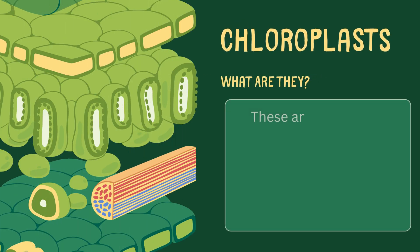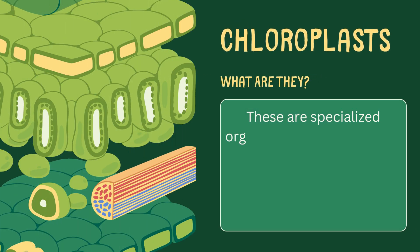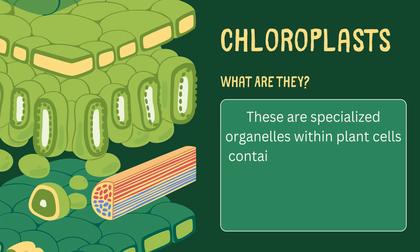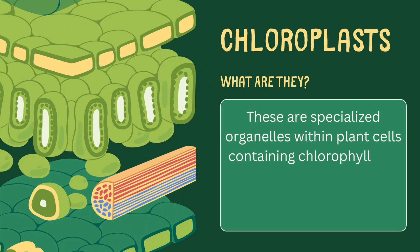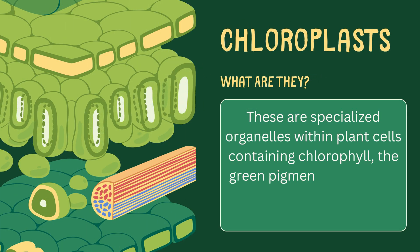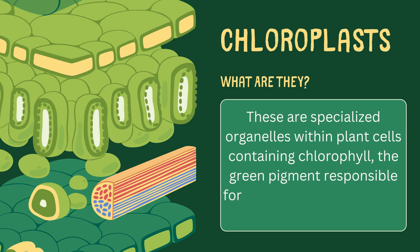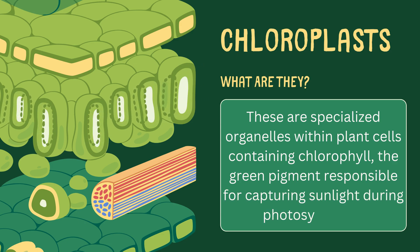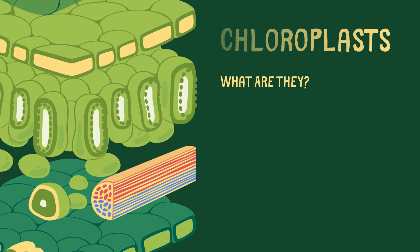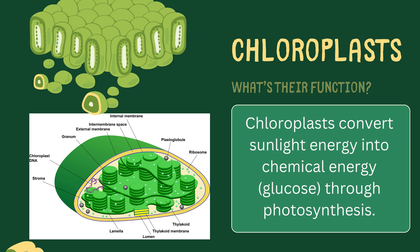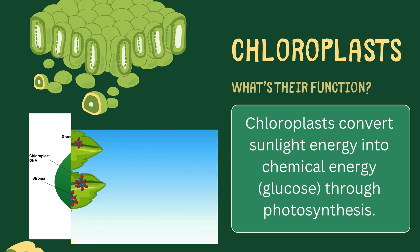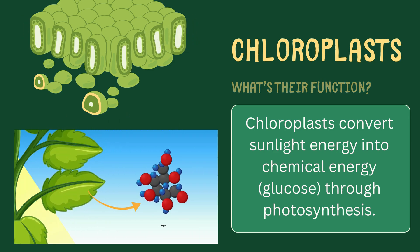Chloroplasts. These are specialized organelles within plant cells, containing chlorophyll, the green pigment responsible for capturing sunlight during photosynthesis. Chloroplasts convert sunlight energy into chemical energy through photosynthesis.